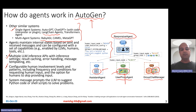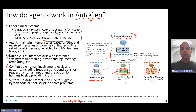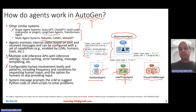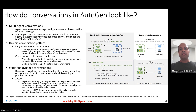Autogen also has a configurable human interface. You can define your own human involvement levels and patterns, including frequency and conditions for requesting human input, and also the option for humans to skip providing input at different points in the conversation. For the LLM agent, the default system message prompts it to generate Python code or shell code, so that other agents like the user proxy agent can take that code, execute it, and continue the conversation based on the results.